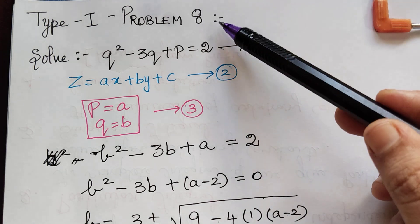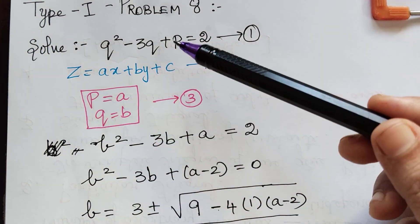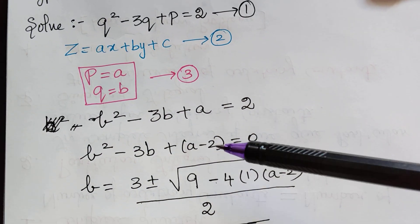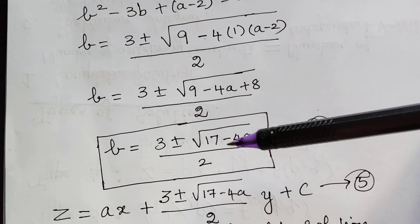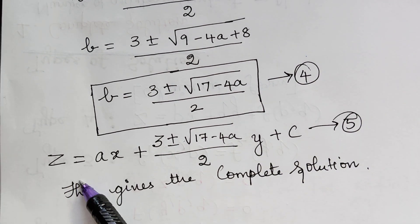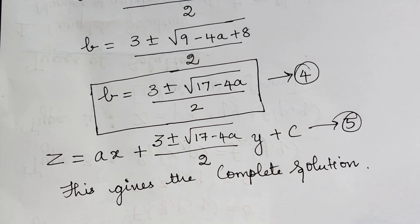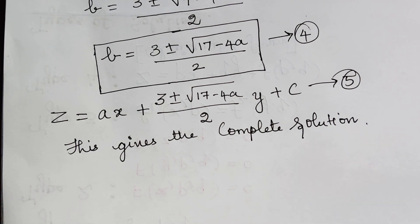Problem 8 is solved similarly. Substituting p = a and q = b in equation 1 gives a quadratic in b. Applying the quadratic formula, the value of b is (3 plus or minus √(17 minus 4a)) divided by 2. This gives the complete solution. There is no singular integral, and the general integral is found by putting c = f(a) in equation 5, differentiating, equating to 0, and eliminating a between equations 6 and 7.